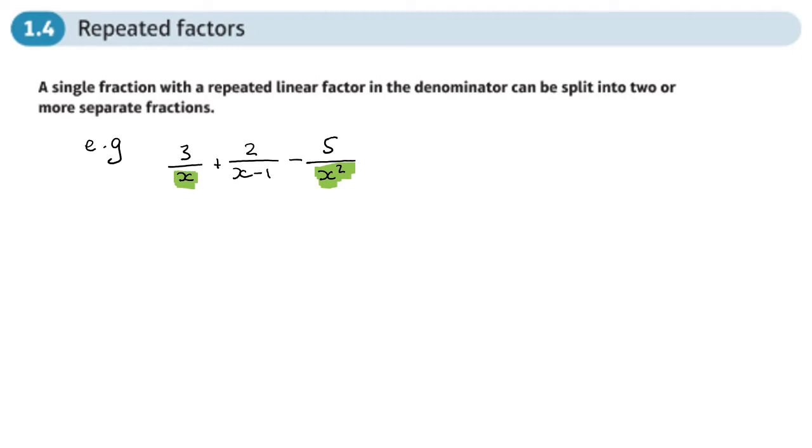Here's another one: 7 over x minus 1 minus 4 over x minus 1 squared plus 1 over x minus 1 cubed. So here we have a repeated factor of x minus 1. x minus 1 is a factor of that and x minus 1 is a factor of that.